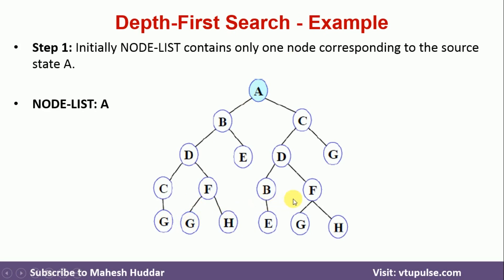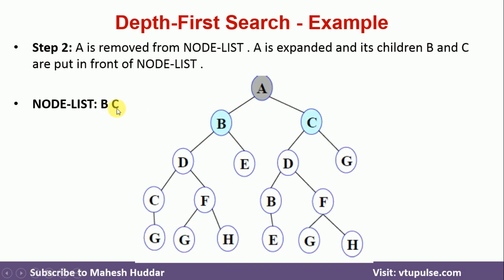We have multiple goal states here — you can find one, two, three, and four goal states. Initially, we will put the initial state A into the node list. Now we will try to find the successors of A, which are B and C. So A is removed from the node list, and B and C are added. Once B and C are added, we will get the first successor, which is B. B will now become the initial node, and we check whether B is a goal node or not.